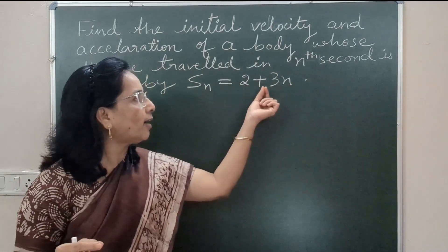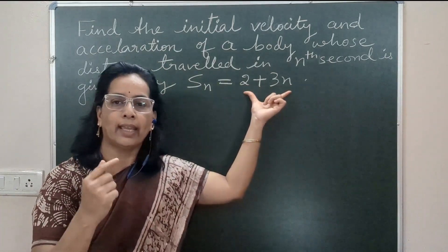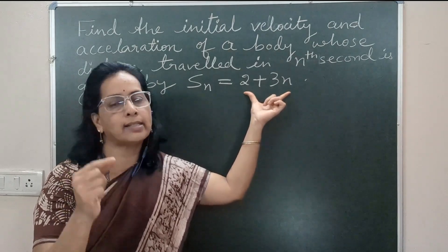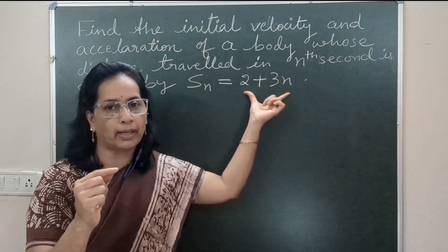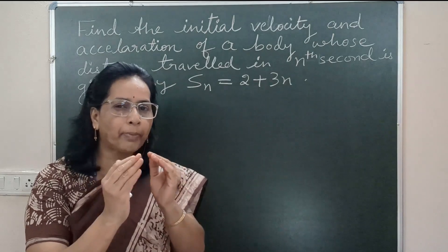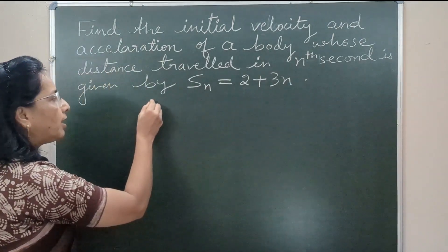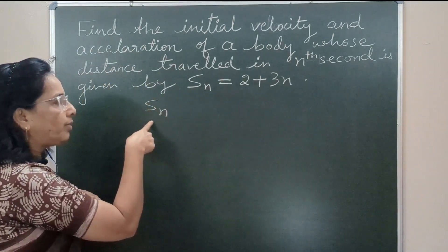So we have to express this quantity in the form of u + (a/2) times (2n - 1). For that, we will do some simple modifications. We are given distance traveled in the nth second as 2 + 3n.